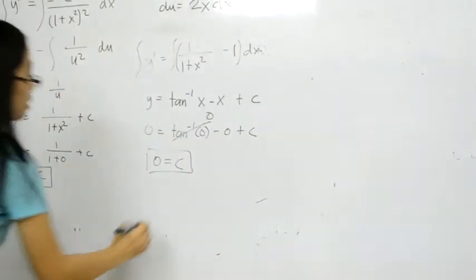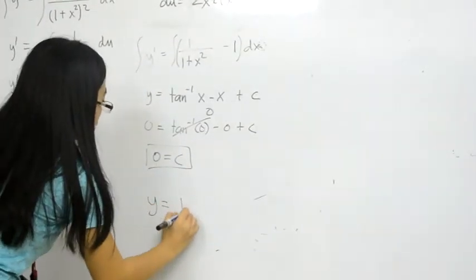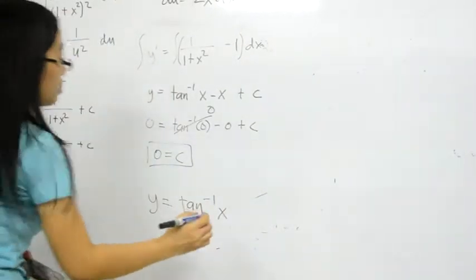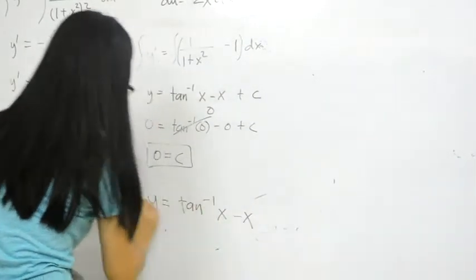So the final answer is y = arctan(x) - x. I see you sitting in the corner looking kind of blue. Don't you try to hide from your nose.